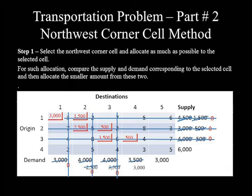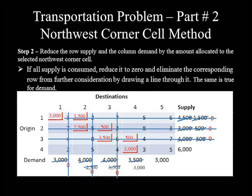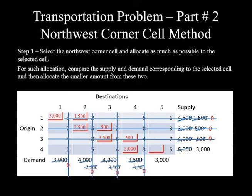Only row 4 remains with two active cells. The left-hand cell is the northwest corner cell. Supply = 6,000 and demand = 3,000; allocate 3,000. Supply: 6,000 − 3,000 = 3,000; demand reduces to 0. Column 4 is eliminated. The only remaining active cell is the southeast corner cell. Its demand equals its supply, both equal to 3,000. Allocating 3,000 reduces both to 0, completing all allocations.